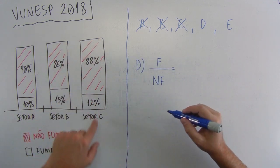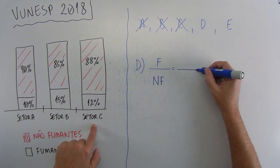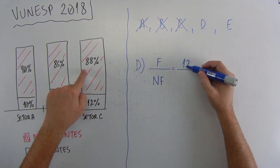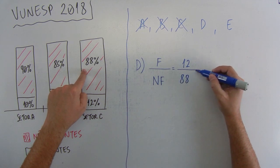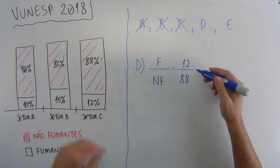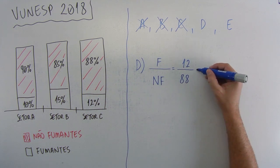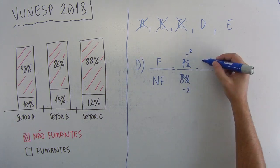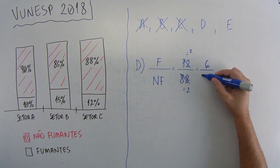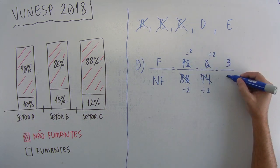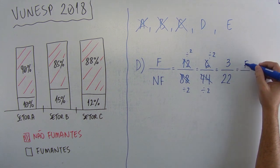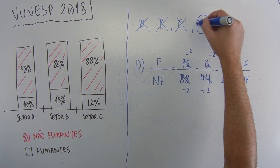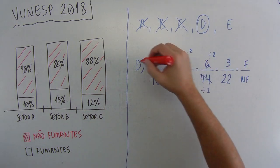Vamos assumir que aqui no setor C são 100 pessoas. Então, aqui tem 12 fumantes e aqui 88 não fumantes. Bom, mas ele disse que era 3 para 22. Aqui está 12 para 88. Vamos simplificar. Simplificando aqui, por 2, vai dar 6 para 44. De novo, por 2, vai dar 3 para 22. Então, assim, para cada três fumantes, temos 22 não fumantes e essa aqui é a alternativa certa da questão. O gabarito é a letra D.